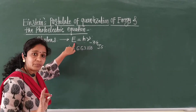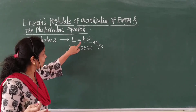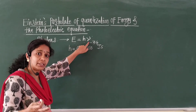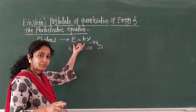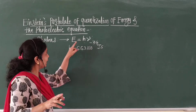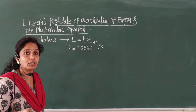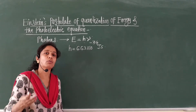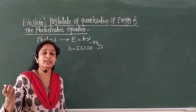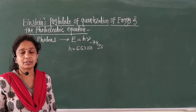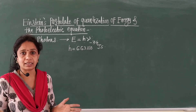In this equation, E is related in terms of a particle and ν is related in terms of a wave. From this equation, we can say that energy is directly proportional to the frequency of incident radiation. As the frequency of incident radiation has a large value, energy is large.